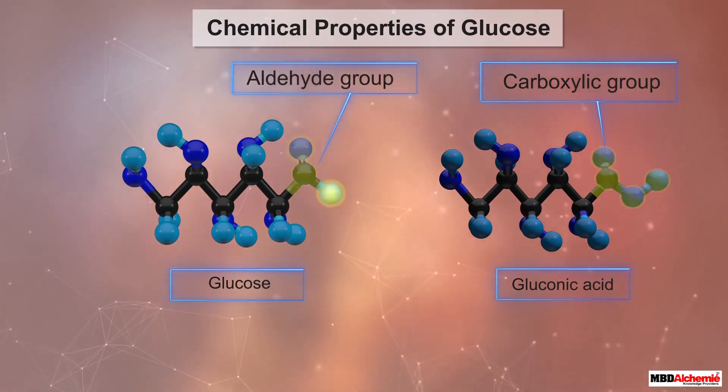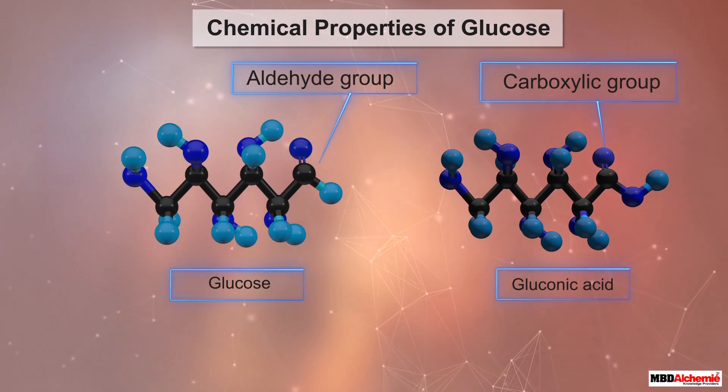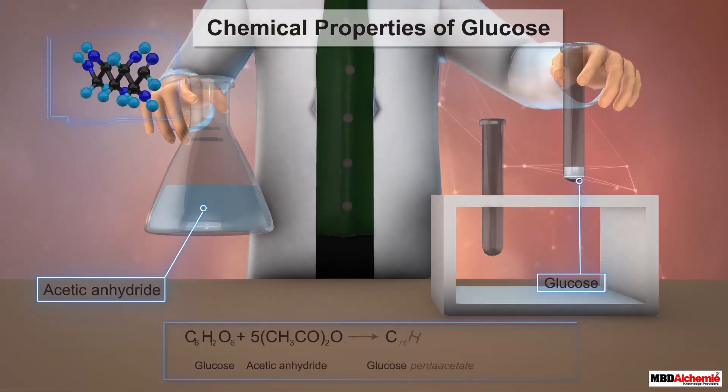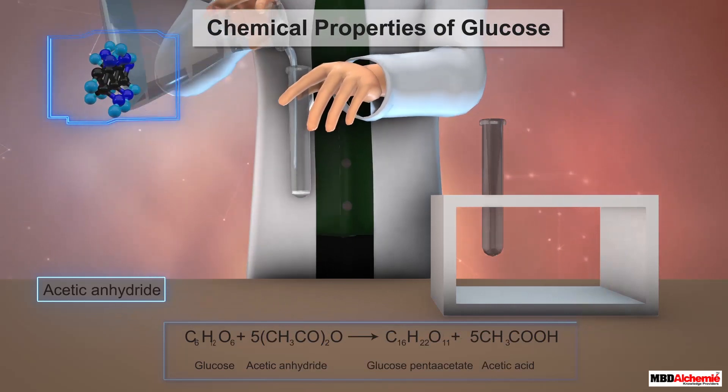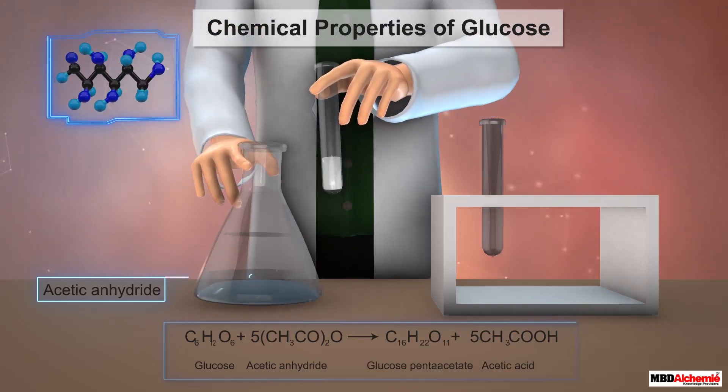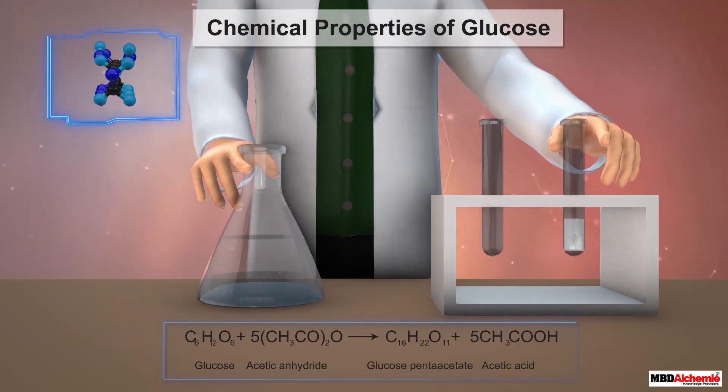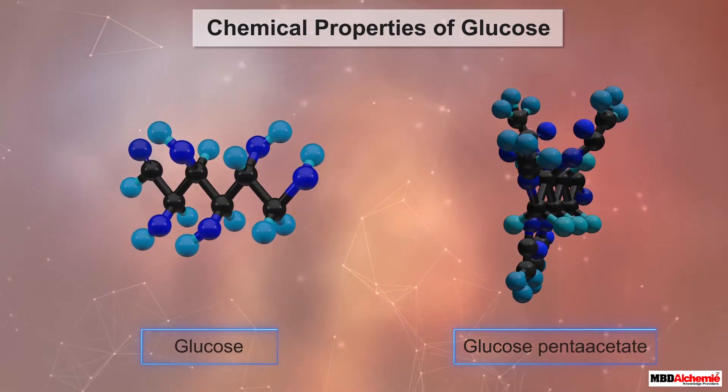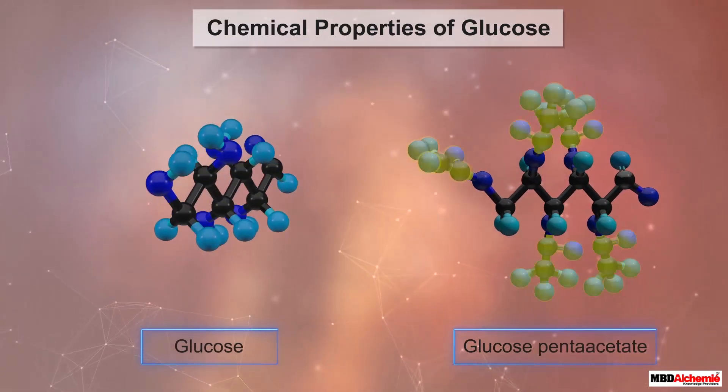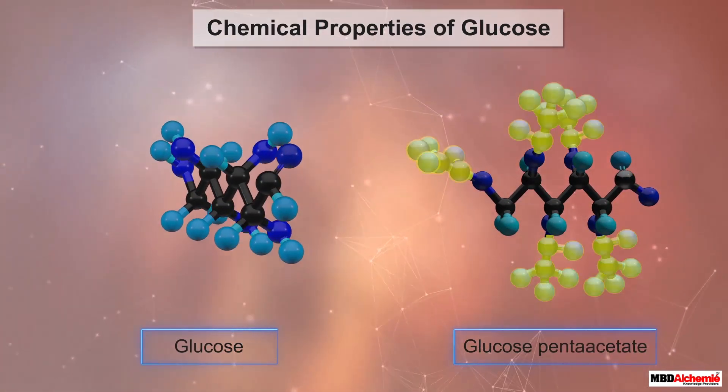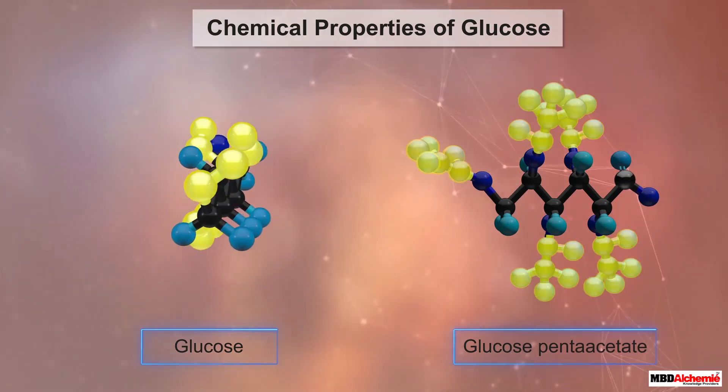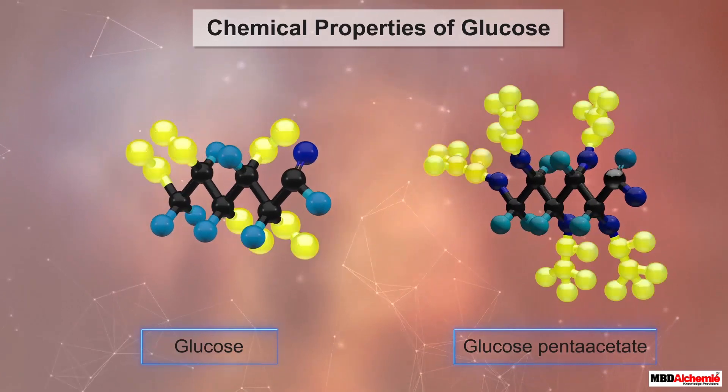Besides, glucose reacts with acetic anhydride to form glucose pentaacetate. The presence of five acetyl groups in the product indicates the presence of five hydroxyl groups in a glucose molecule.